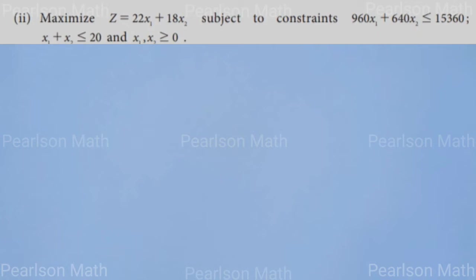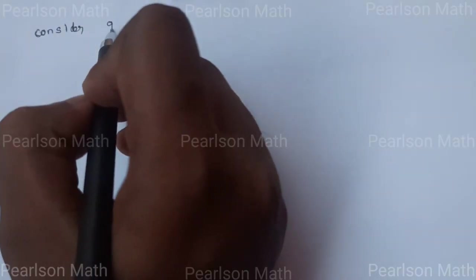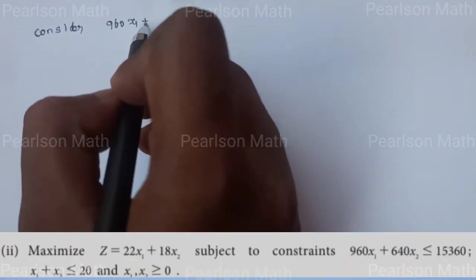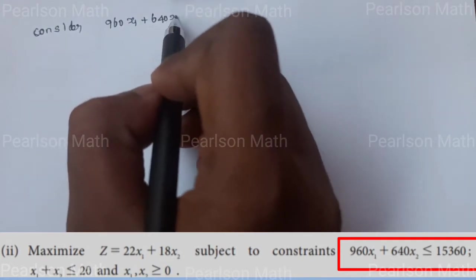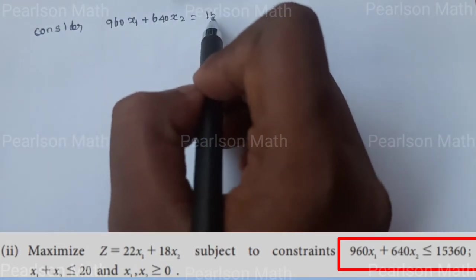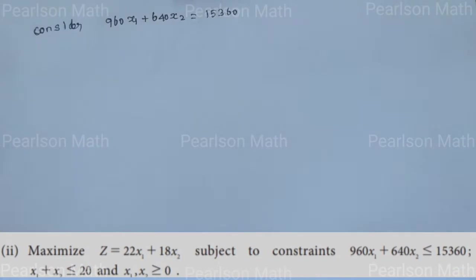Second problem: Maximize Z equals 22x₁ plus 18x₂ subject to constraints: 960x₁ plus 640x₂ less than or equal to 15,360, x₁ plus x₂ less than or equal to 20, and x₁, x₂ greater than or equal to 0.